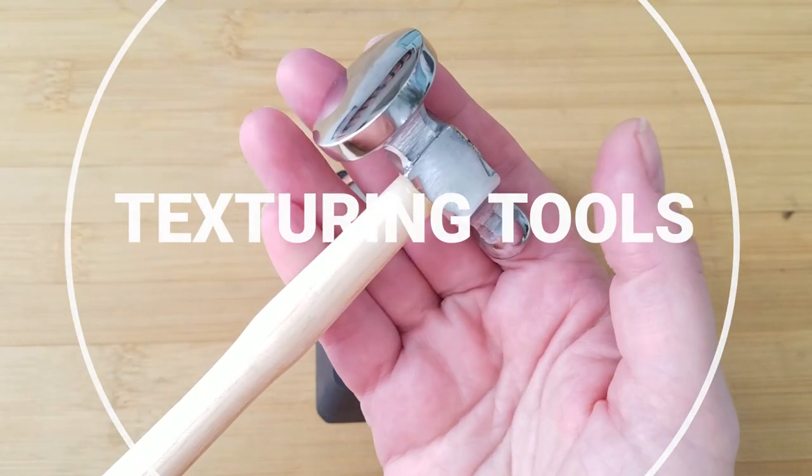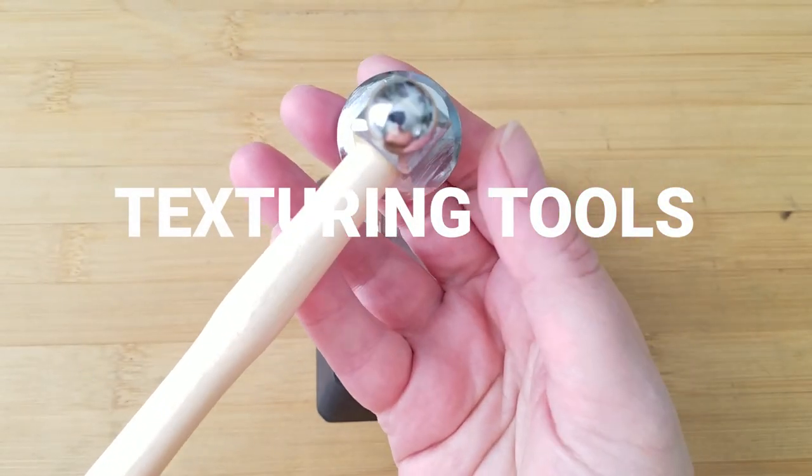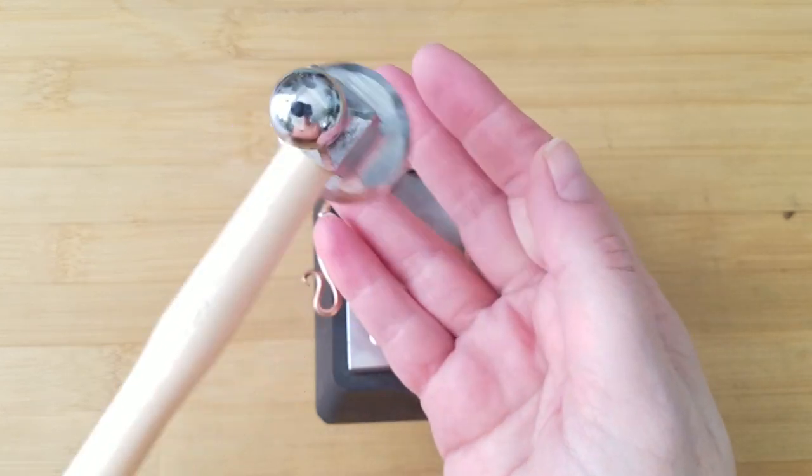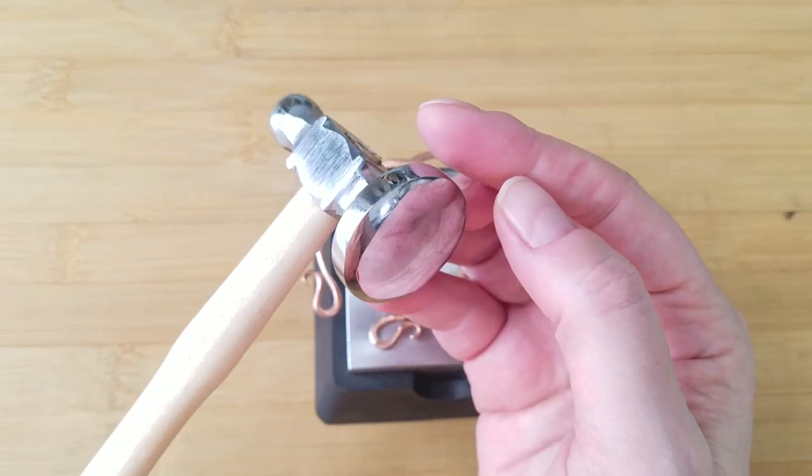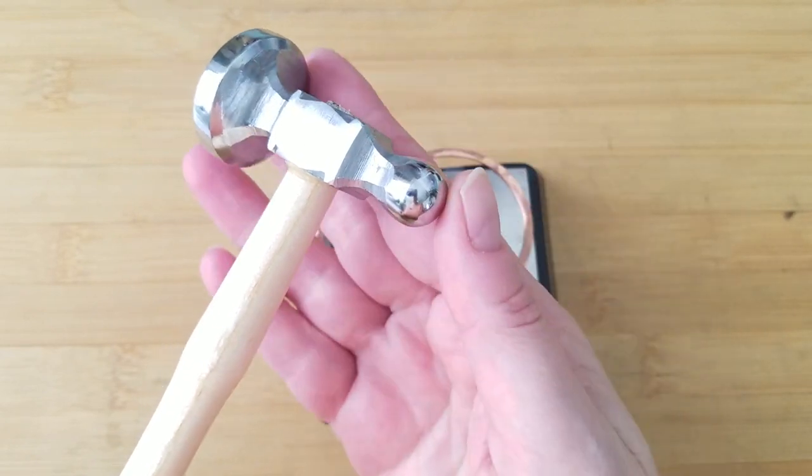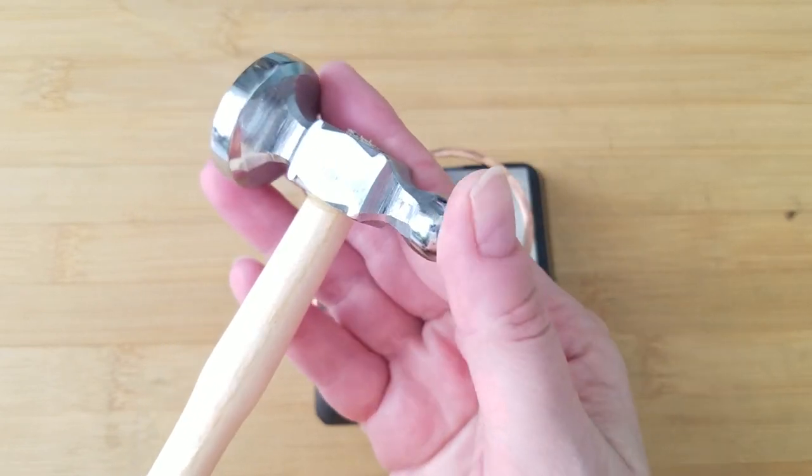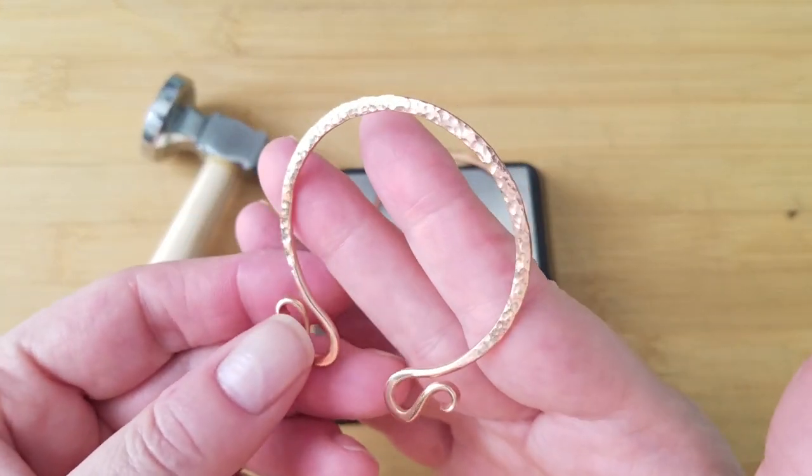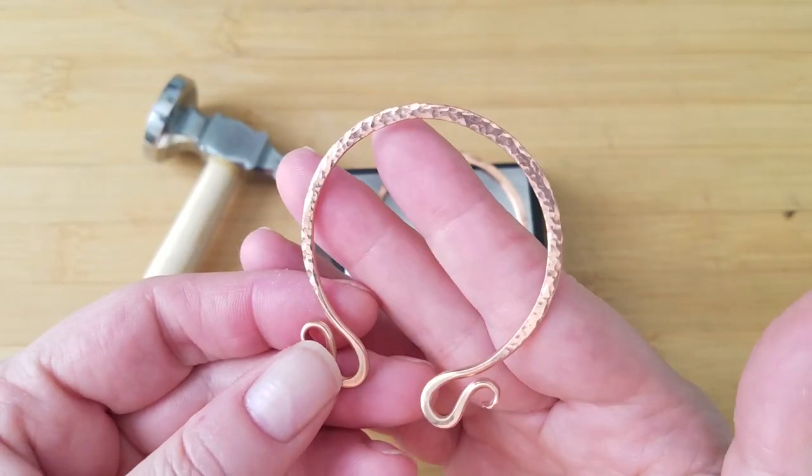Before we get started, let's talk briefly about texturing tools. This is just a standard chasing hammer and this is all I use for texturing. Because I have limited space, I try to keep my tools to a minimum and this little hammer does everything I need it to do. It leaves a beautiful classic hammered texture.